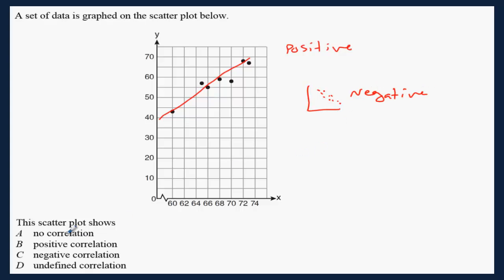Also, the no correlation is where you have dots all over the place, and you cannot determine if it's going this way or going the other way. That's no correlation here. This is no correlation.